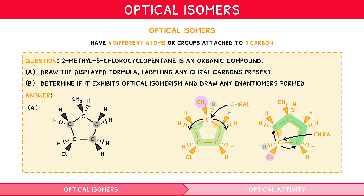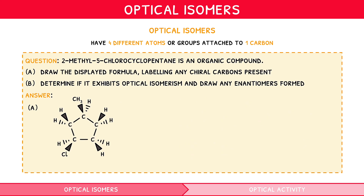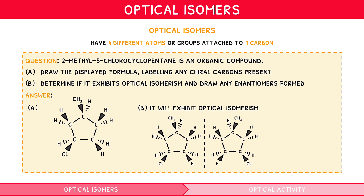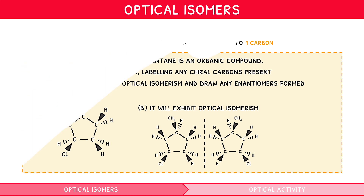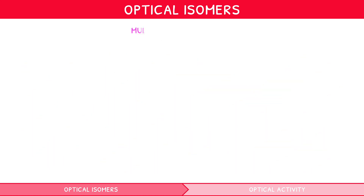Looking at the molecule, there is no line of symmetry, and so the overall molecule will exhibit optical isomerism. We can therefore draw a dotted line to denote a mirror and draw the other enantiomer as a non-superimposable mirror image. It is important to note that, whilst rare for your exam, multiple chiral carbons can also appear in a non-cyclic molecule.